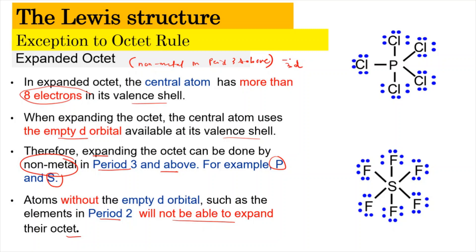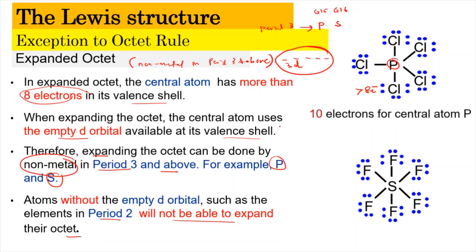Elements like phosphorus and sulfur have a 3d empty orbital. Phosphorus is in group 15 and sulfur is in group 16, and they are both in period 3. Because of this, they can expand the electrons at the central atom so that they have more than 8 electrons. For phosphorus, it can have 2, 4, 6, 8, 10 electrons. For sulfur, it can have 2, 4, 6, 8, 10, 12 electrons at the central atom.